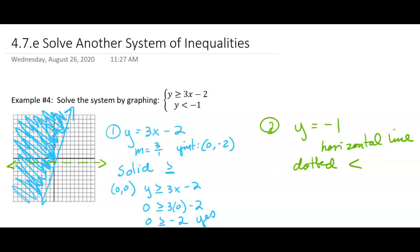That is a dotted horizontal line. Okay, now, think about y is less than negative 1. So if you think about the point 0, 0, y, right there is the y, is 0 less than negative 1? No.